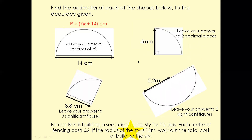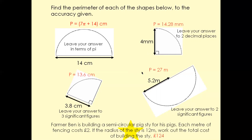Now here are some questions for you to try. Pause the video, give them a go, and we're going to look at the answers in a minute. The answers are: for this question the perimeter is going to be 14.28, 13.6 centimeters, 27 meters, and 124. If you got the answers correct, give yourself a tick and a smiley face. If the answers are wrong, give yourself a cross and a sad face — but there's no need to be sad; go back, watch the video again, and give them another go. I'm sure you'll be fine.